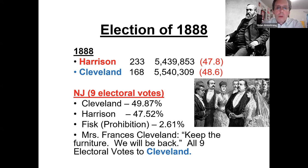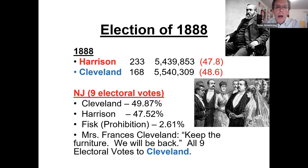Her name was Francis, and she became very popular — kind of the Jackie Kennedy of her era. Their child was Ruth, nicknamed Baby Ruth, a very popular child since many presidents didn't have small children. In his second election, Cleveland loses to Harrison. The electoral vote was high for Harrison, but Cleveland's popular vote was actually higher — the second election where the popular vote didn't match the electoral vote.